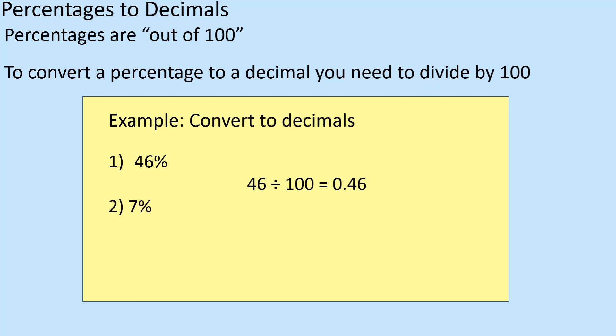With 7%, same process: divide by 100 to get 0.07. You've just got to remember to remove the percentage sign because we're talking about going from percentage to a decimal, so divide by 100.